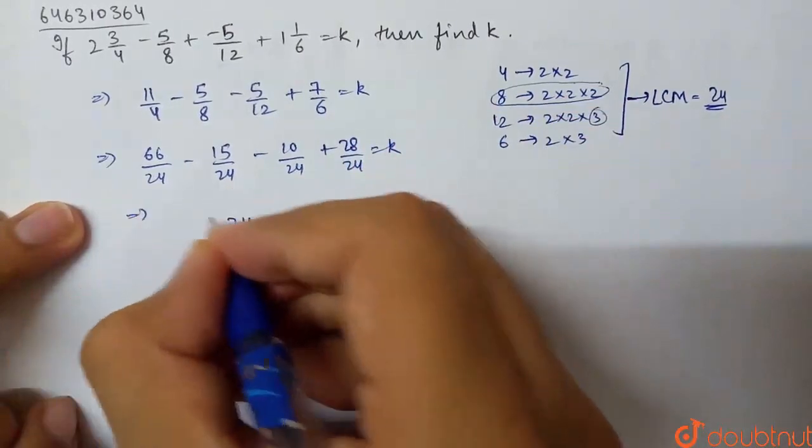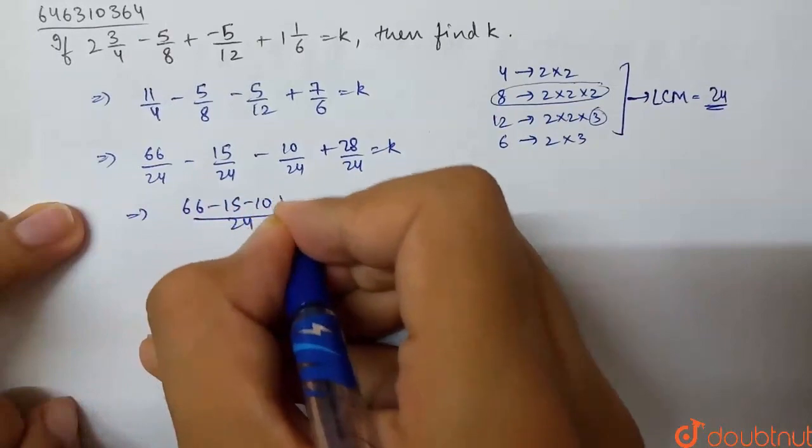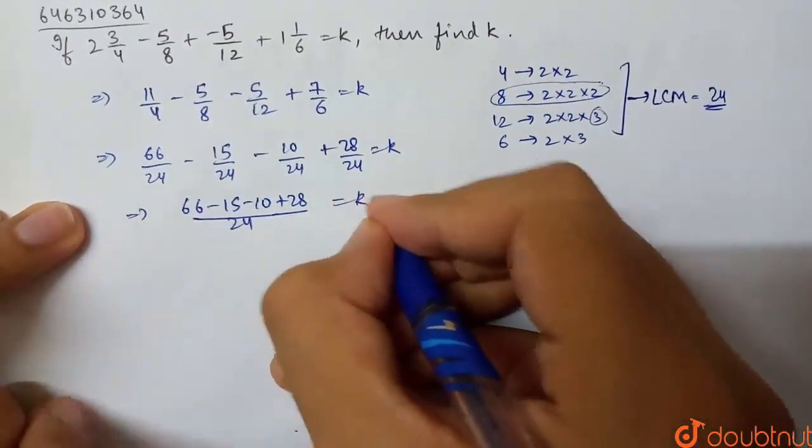Now all denominators are 24. The equation becomes (66 minus 15 minus 10 plus 28) over 24 equals k.